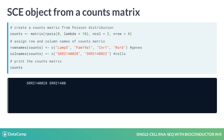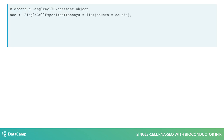Here you see that gene names are LEM5, FAM19A1, CNR1, and RORB, and cell names start with SRR and then a number. Using the matrix of counts we just created, we create a SCE object using the SingleCellExperiment function. The first argument is assays, which takes a list of count matrices. Here, we'll only use our matrix of counts with four genes and two cells.